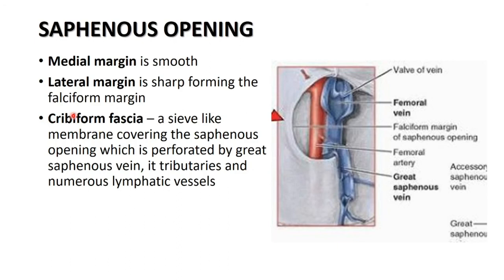Cribriform means sieve-like. The sieve-like cribriform fascia covers the saphenous opening because it has many perforations. These perforations are made by veins — the great saphenous vein pierces the cribriform fascia to enter the femoral vein in the saphenous opening, along with its tributaries and lymphatic vessels from the superficial inguinal lymph nodes.